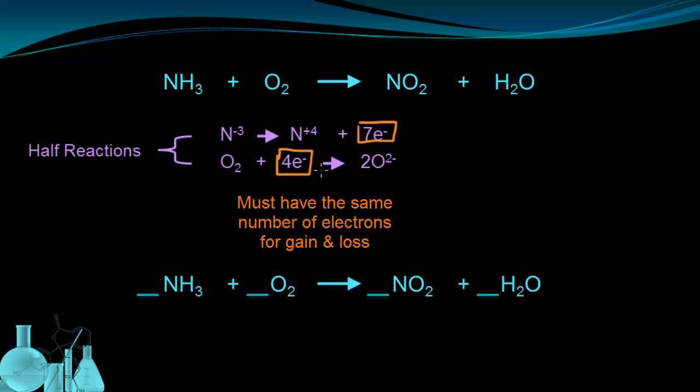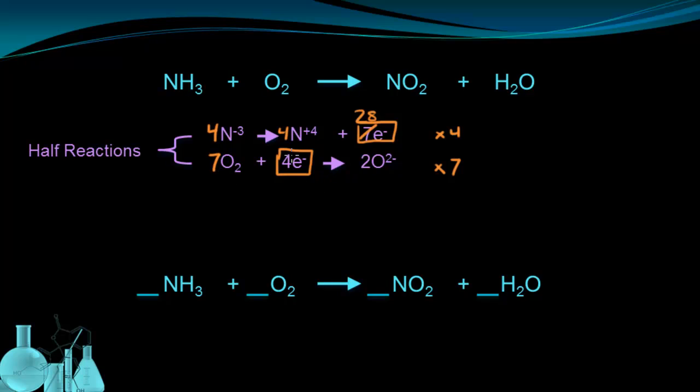So how am I going to get these two to be the same as each other? Well, I can multiply the first one by four, and the other one by seven. That means I'll have four NH3, four NO2, and 28 electrons. For the oxygens, I'll have 7O2, 28 electrons, and 14O2-.